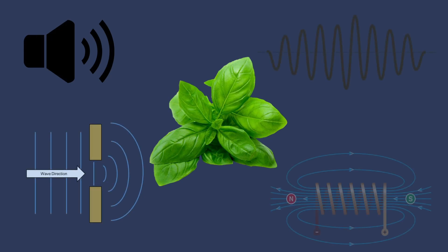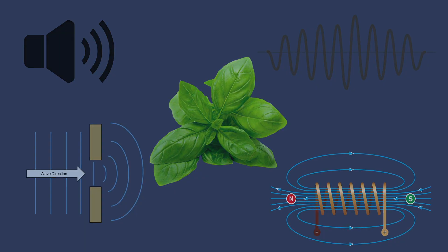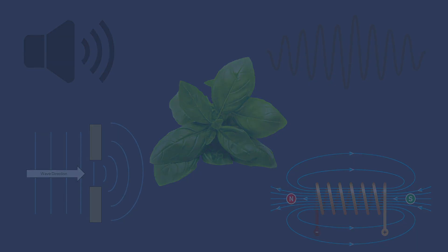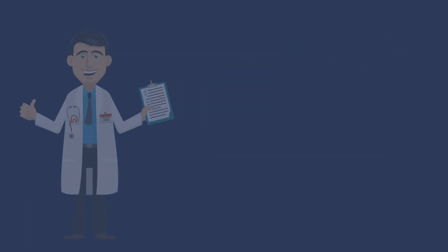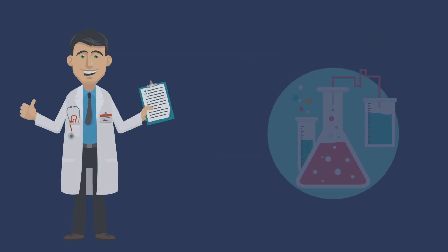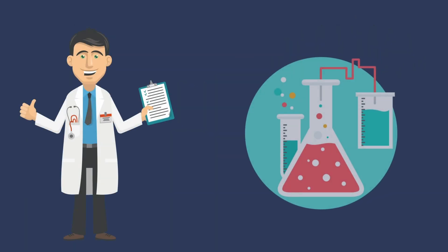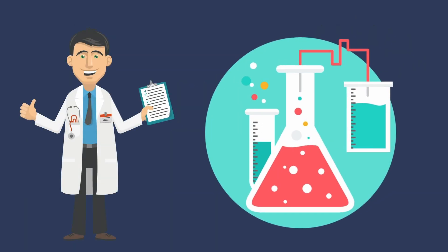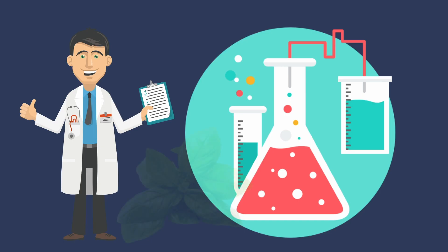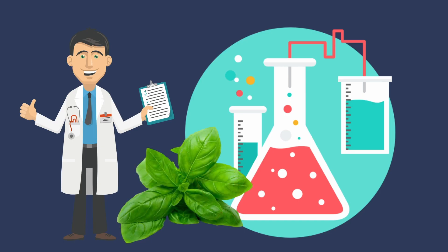Each of the listed approaches gives results, but it can be improved if you use a combination of different physical factors and chemical processes acting on plant material. Such a possibility exists in one of the units — the Vortex Layer Device AVS.